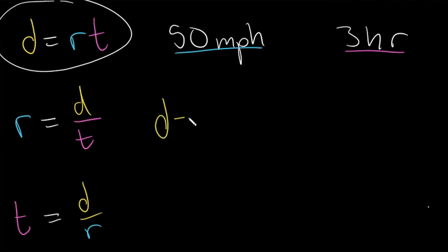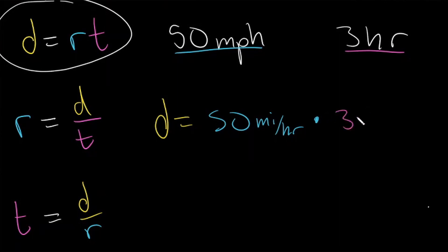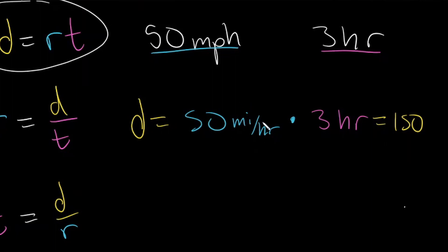Distance is going to be equal to 50 miles per hour multiplied by 3 hours. 50 times 3 is going to be equal to 150. Our unit is distance, so we use miles. The hour in the denominator and the hour in the numerator cancel, and we're left with miles. That's how we know we've used the formula correctly — the units cancel properly.